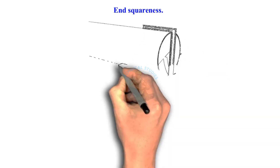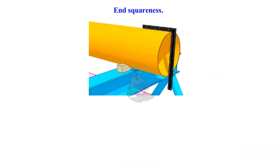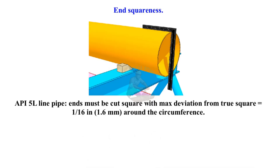End squareness — API 5L line pipe: ends must be cut square, with a maximum deviation from true square equal to 1/16 inch (1.6 millimetres) around the circumference.